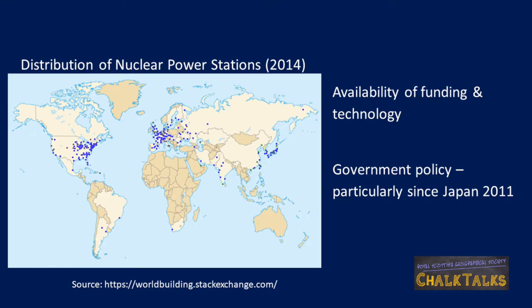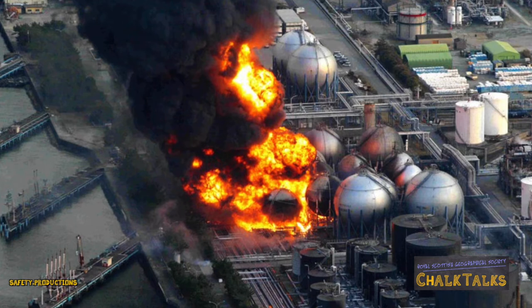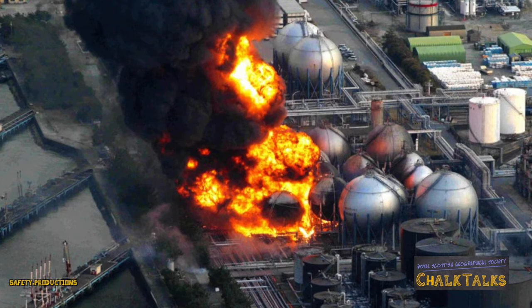Geothermal energy can involve high costs and complex technology, inhibiting some poorer nations. This graphic shows the distribution of countries who use nuclear energy. This is closely linked to the availability of funding and technology, but there are several countries around the world who choose to be nuclear-free, highlighting the importance of government policy. This is particularly true since the Japanese earthquake of 2011, when the meltdown of the Fukushima nuclear plant caused some nations to reconsider their relationship with nuclear power.